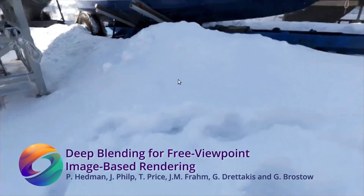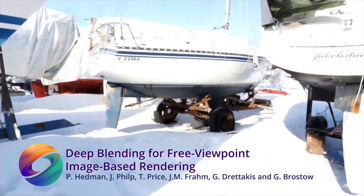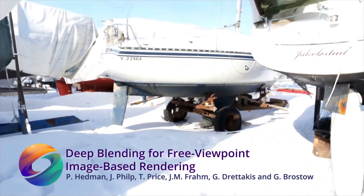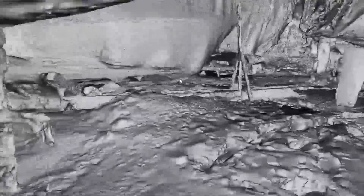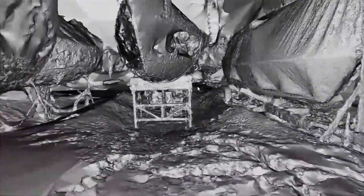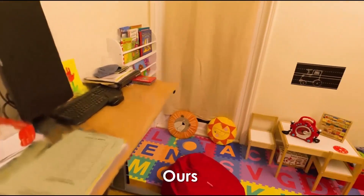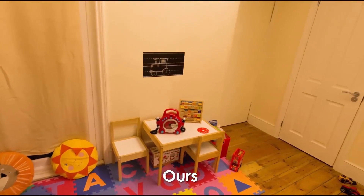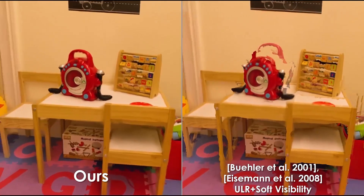Image-based rendering techniques can be used to capture 3D scenes from photographs, allowing a user to navigate, changing their viewpoint freely. Novel views are synthesised in IBR by combining warp pixels from input photos. Neural networks that learn blending weights greatly improves on previous blending methods, correcting for the many artefacts that have plagued earlier systems, as can be seen in these sequences.